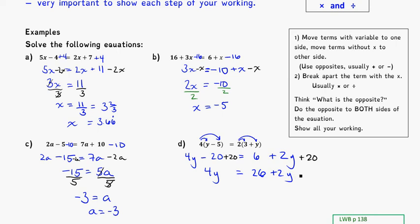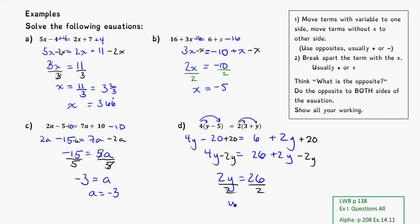My next step to get the 2y to the other side is to subtract 2y from both sides, because the opposite of plus 2y is minus 2y. Combining terms, 4 minus 2 gives me 2y is equal to 26, because those two cancel. My last step is to divide by 2 on both sides. So y is equal to 26 divided by 2, which is 13.